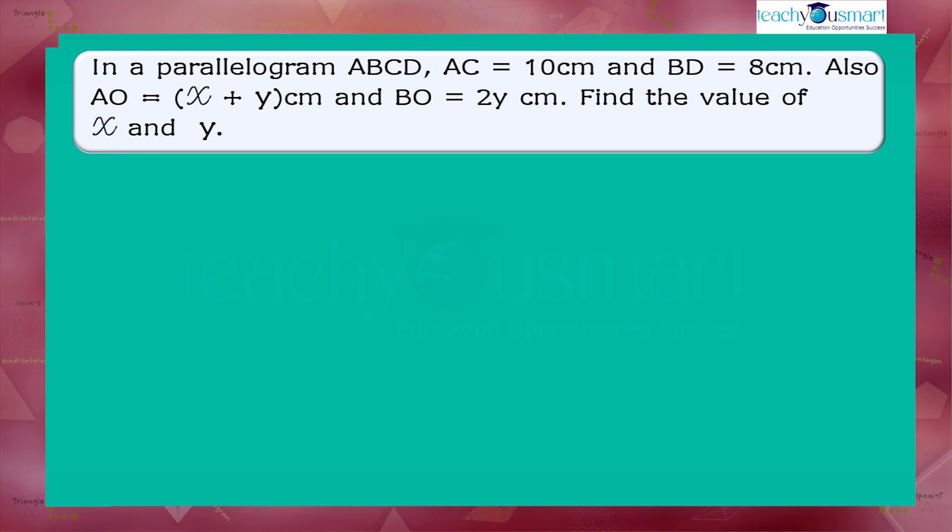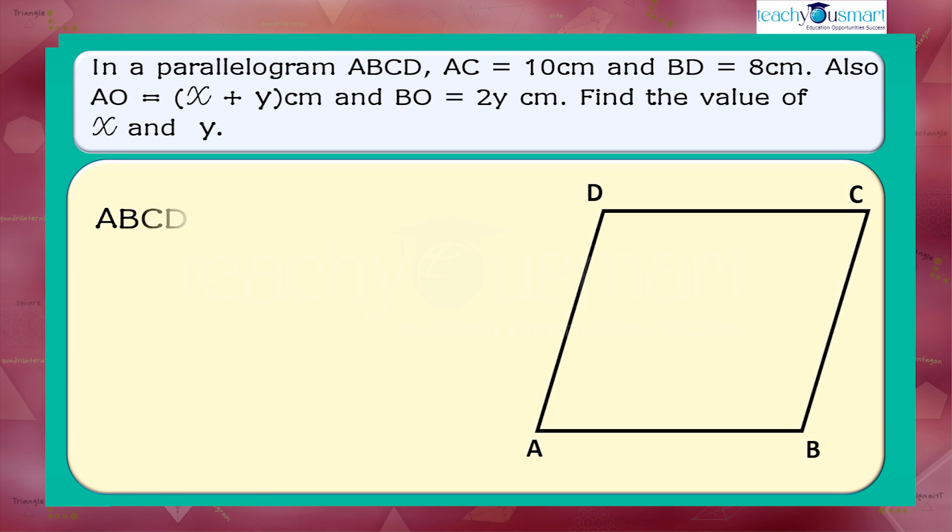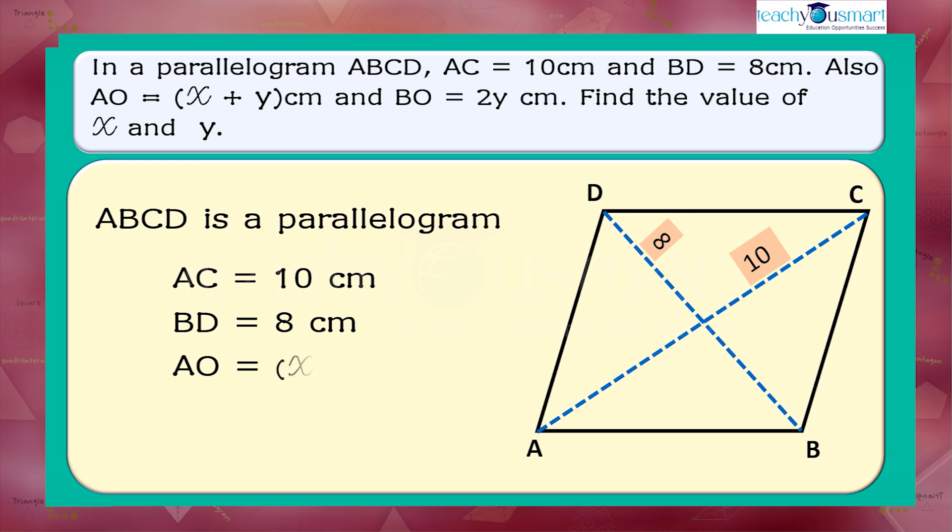Given that ABCD is a parallelogram with AC equals 10 cm, BD equals 8 cm, AO equals x plus y cm, and BO equals 2y cm.